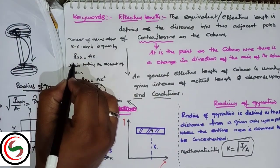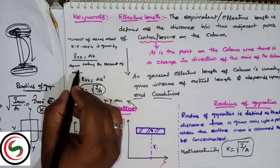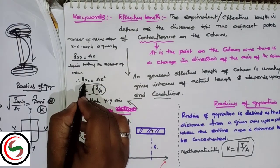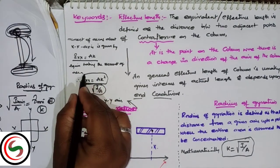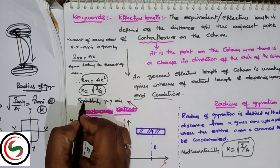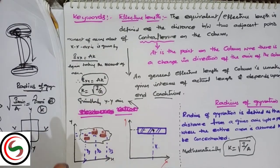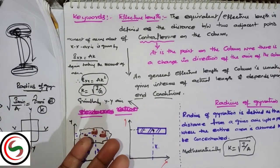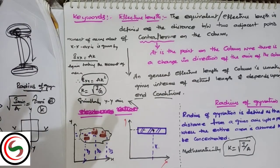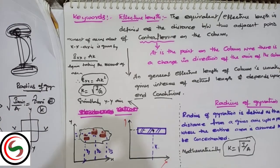Mathematically, Ixx equals A k squared, where k is the radius of gyration. So we can see in both the x and y directions. This formula is important from a diploma point of view.